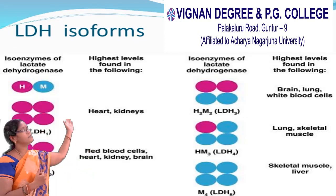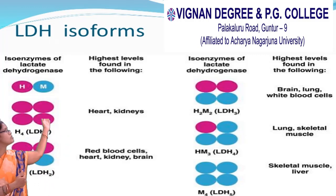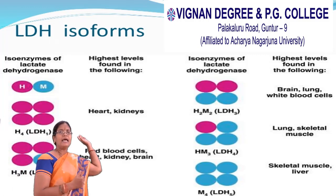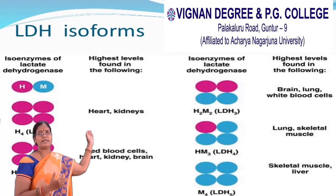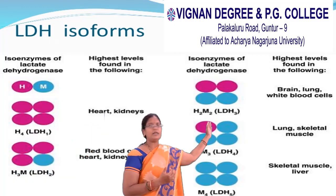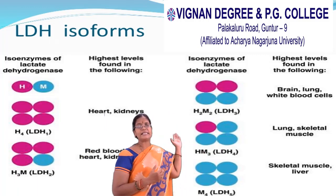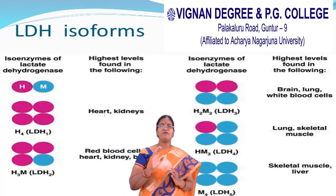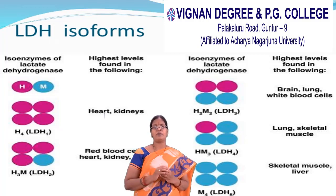We will see the different forms of isoenzymes. Looking at the isoenzymes of lactate dehydrogenase — the first column indicates the isoenzyme, along with its tissue existence and subunit composition. Coming to LDH1: it contains 4 heart subunits, represented as H4. It is mainly found in heart and kidneys.